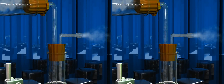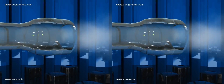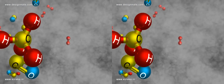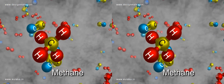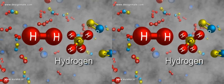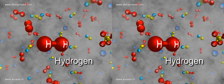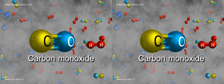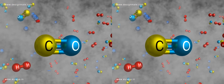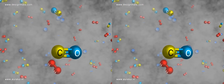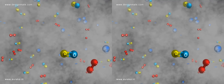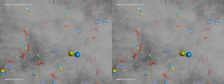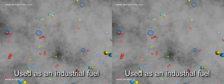Coal gas is mainly a mixture of methane along with hydrogen, carbon monoxide, and other gaseous hydrocarbons, and is used as an industrial fuel.